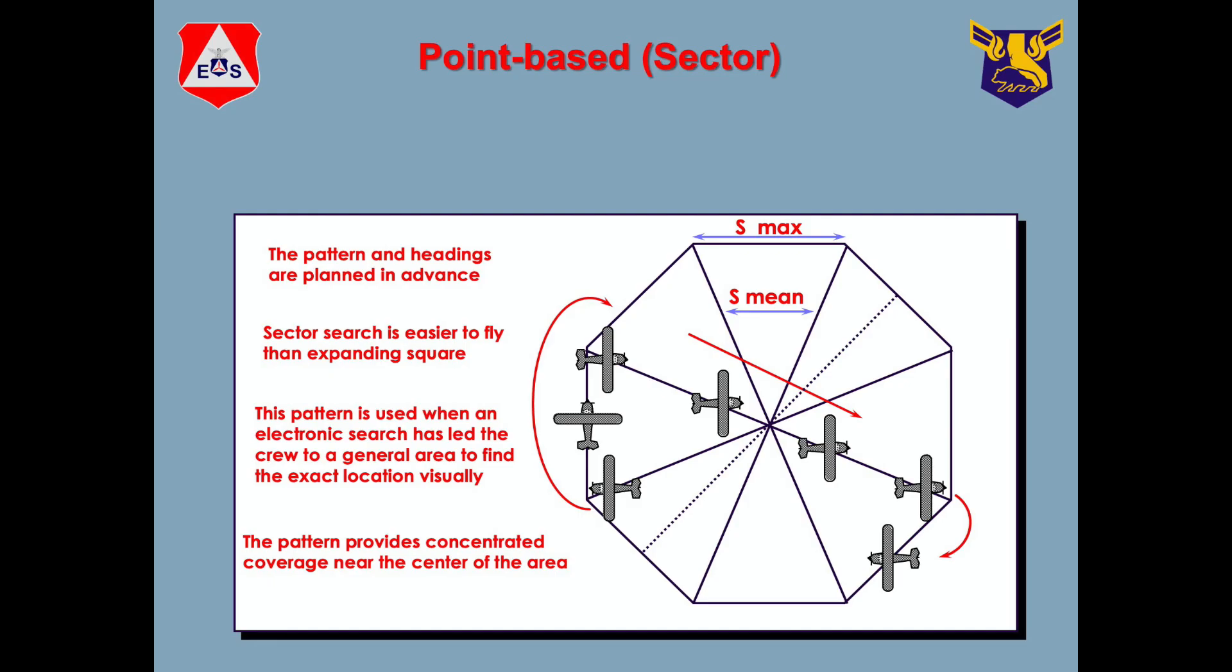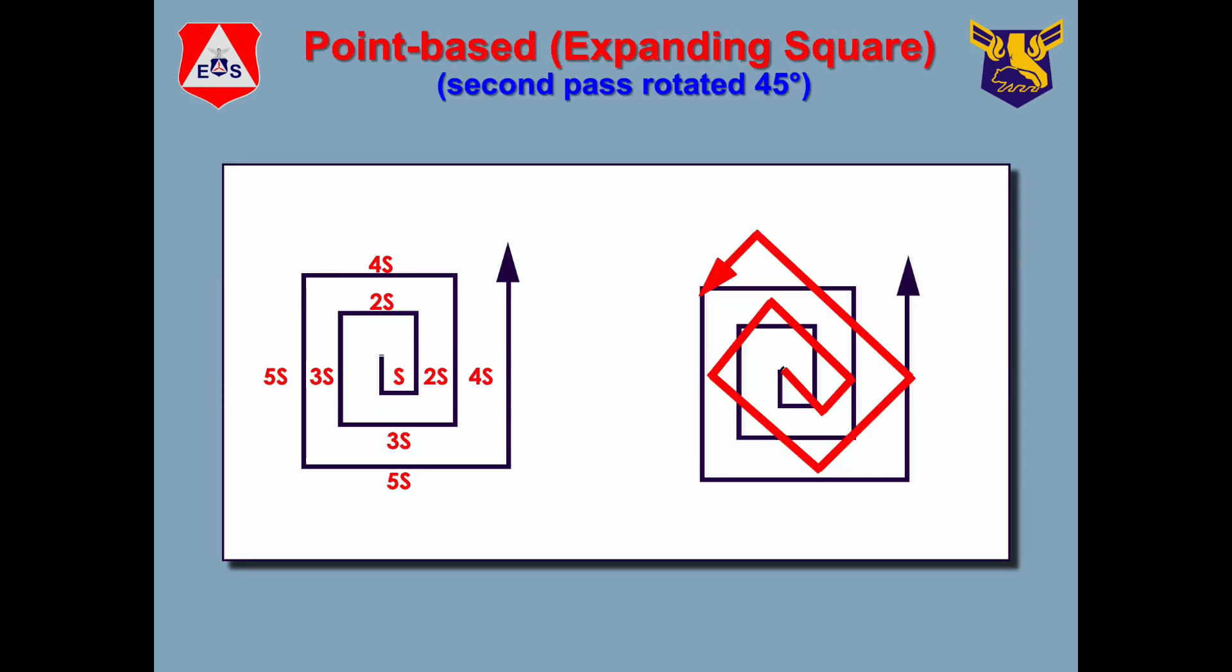Fortunately, the expanding square, the sector, the grid line search, those are all in our electronic flight bag software, like ForeFlight. So we can fly those patterns quite accurately using that particular equipment. So we have two point-based: we've got the expanding square, and we have the sector search.